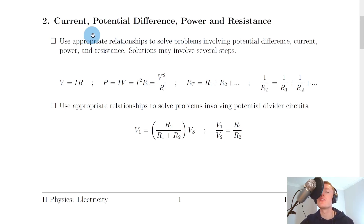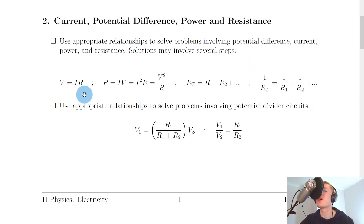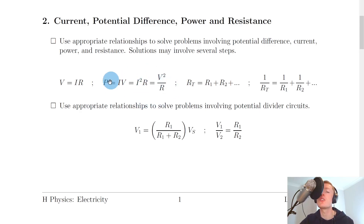Moving on, we have section two: current, potential difference, power and resistance. As I said earlier, most of this topic is a recap from National 5 Physics. It says to use appropriate relationships to solve problems involving potential difference, current, power and resistance — solutions may involve several steps. So we have Ohm's law: V equals IR. We have three power equations: P equals IV, P equals I squared R, and P equals V squared over R, where you choose which one to use based on the data given in the question.